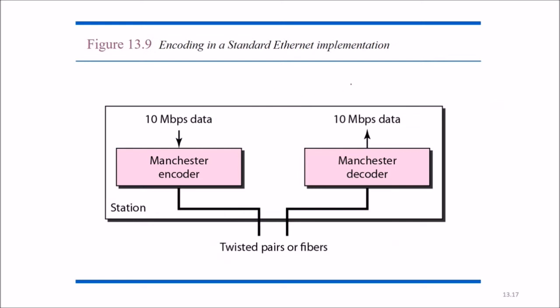Encoding in a standard Ethernet implementation: if you have 10 Mbps data, you use the Manchester encoding, and then you send it through twisted pairs or fibers, and then again Manchester decoder decodes it to the actual data.